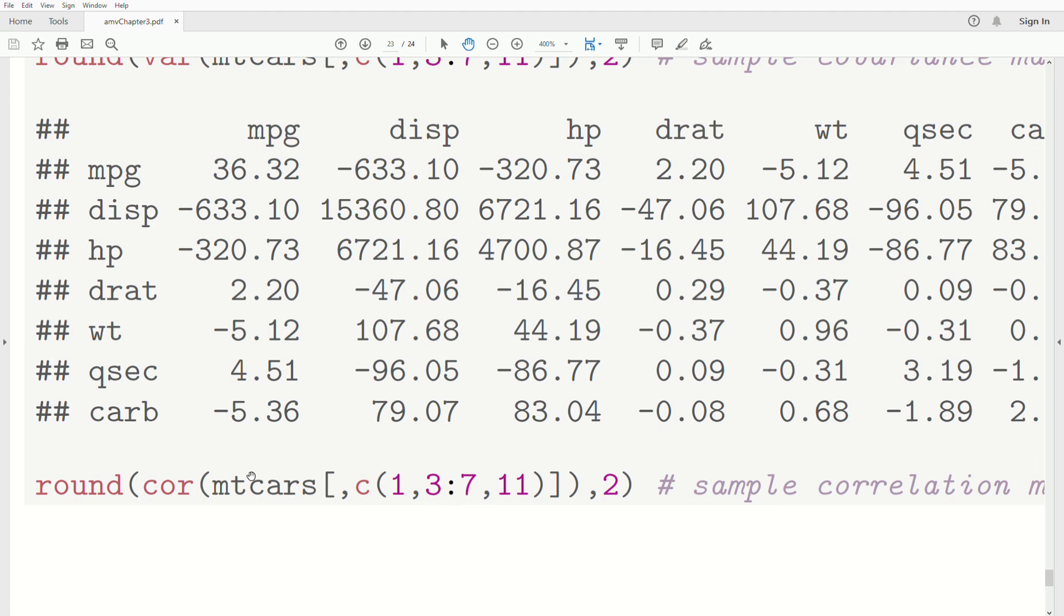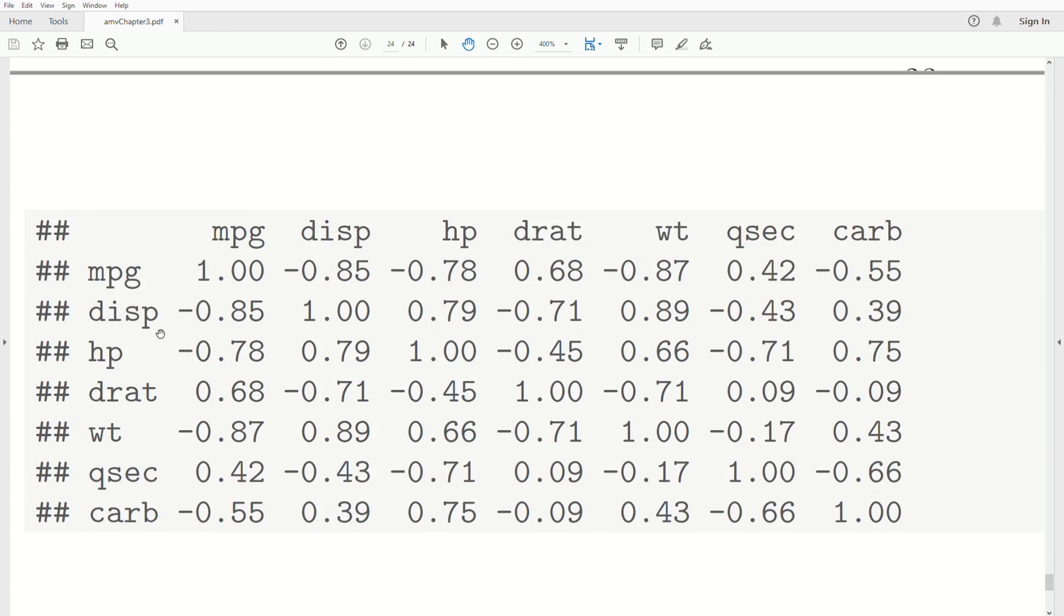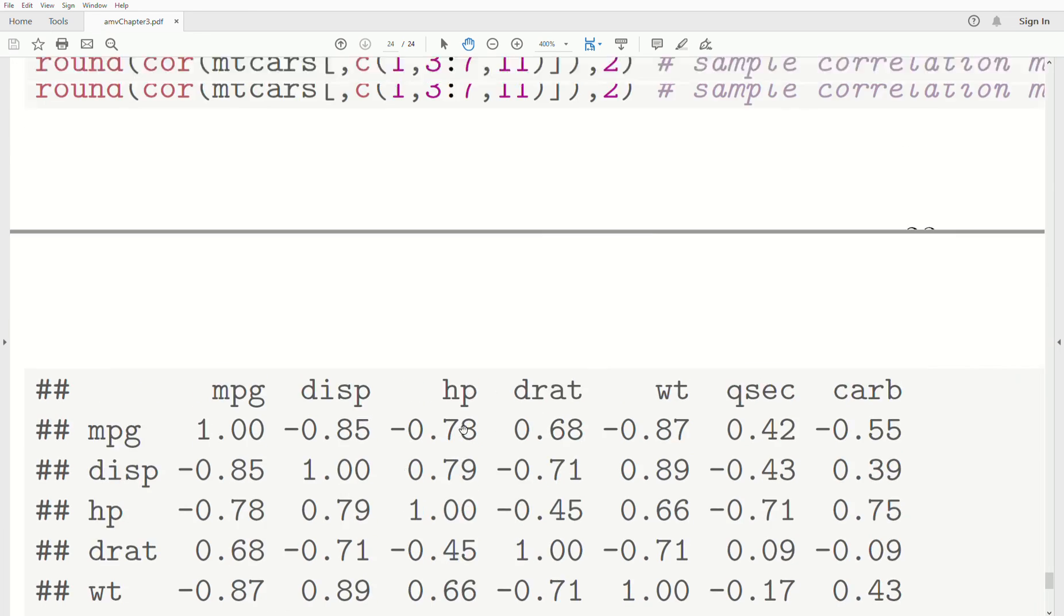To create a sample correlation matrix, you use the function COR, C-O-R, and then you enter your data frame. I round it to two decimal places so it fits on the screen. And this is it. Notice that I said the correlation between displacement and miles per gallon was a negative relationship. And the correlation is negative 0.58. And that's what we observed. Displacement and horsepower, there was a positive relationship. And the sample correlation is 0.79.